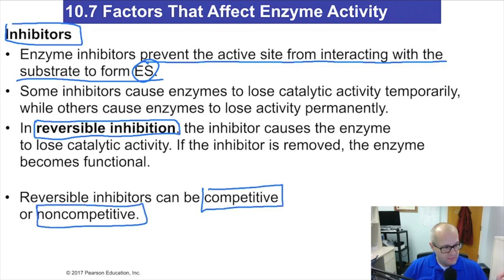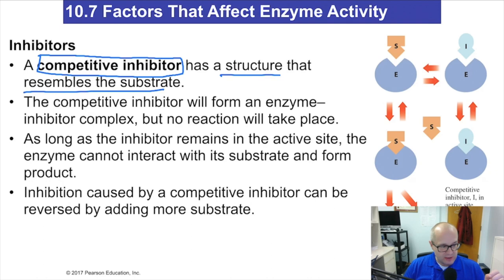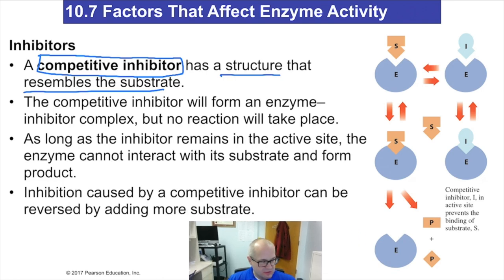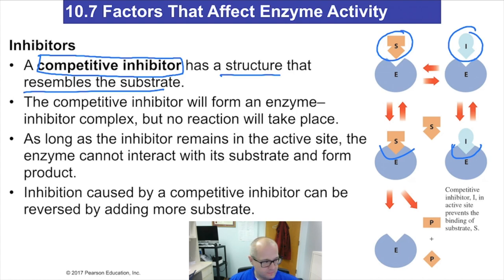In reversible inhibition there are two types: competitive and non-competitive. For a competitive inhibitor, the structure of the inhibitor resembles the substrate — so they both compete for the active site. That's why it's called competitive inhibition. This is reversible, so the inhibitor can come back out. Substrate and inhibitor both compete for the active site.